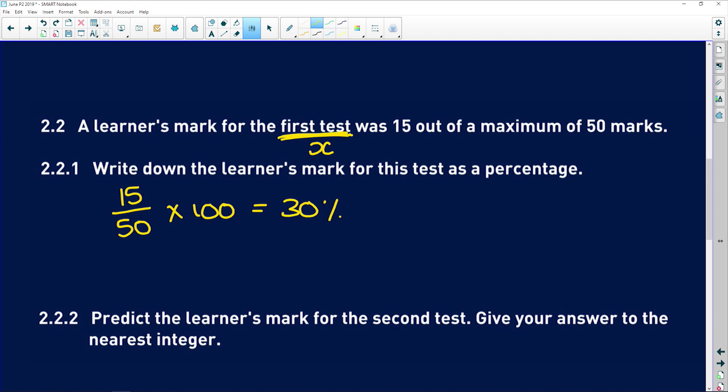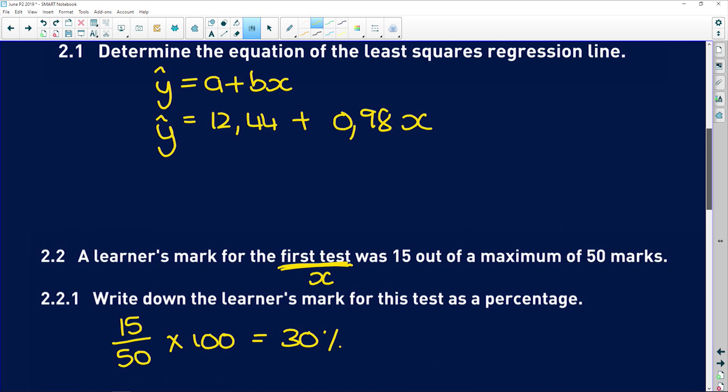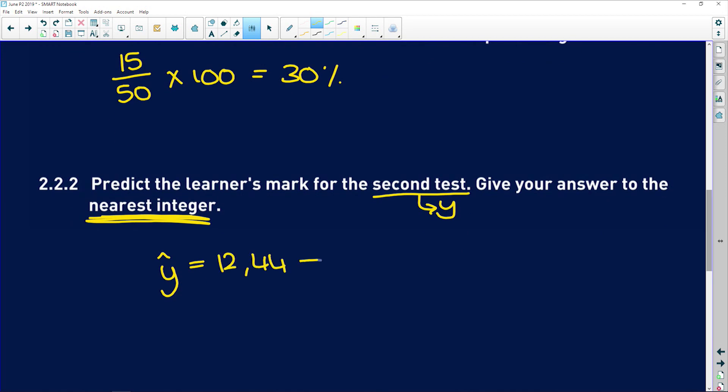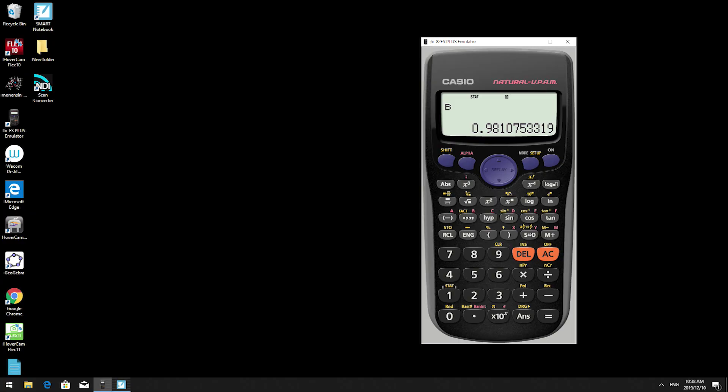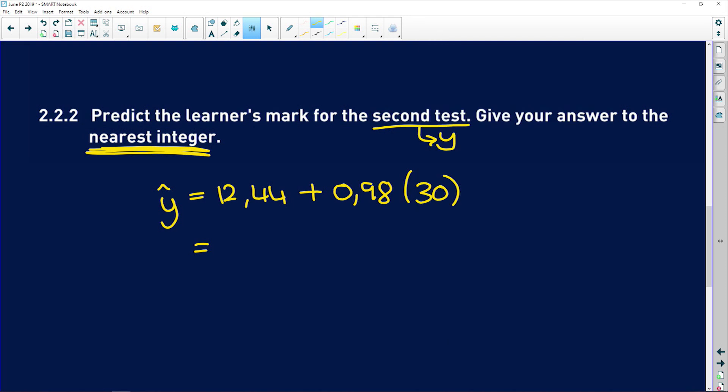So the learner's mark for the first test was 30%. So now 2.2.2 says predict the learner's mark for the second test, which was our y value that we allocated. Give your answer to the nearest integer. Very important. We need to round up or down to the nearest kind of whole number. So remember we said y is equal to 12,44 plus 0,98x, but remember this learner got 30 for their first test. So now we plug that into the calculator and we say 12,44 plus 0,98 times 30. That is going to give us 41,84, but remember guys, nearest integer. So we look at this number, it's greater than 5, so we round up and it is 42%.